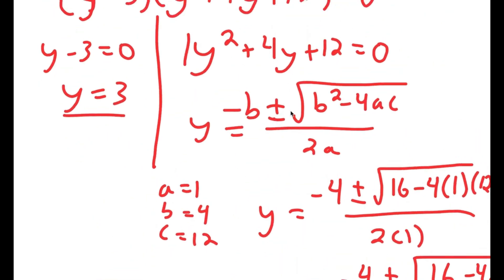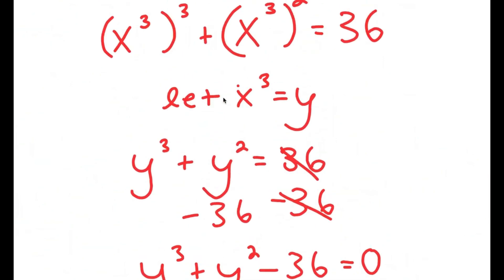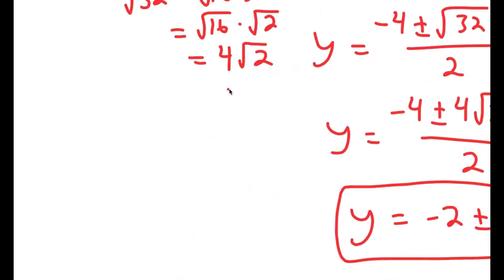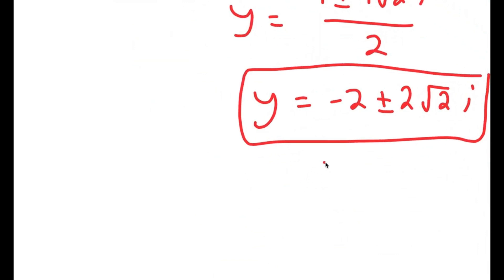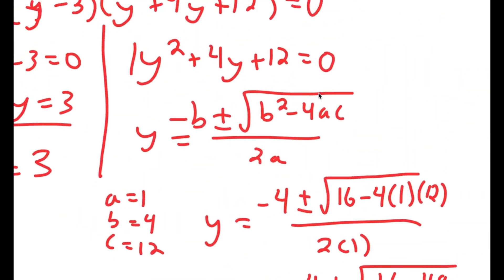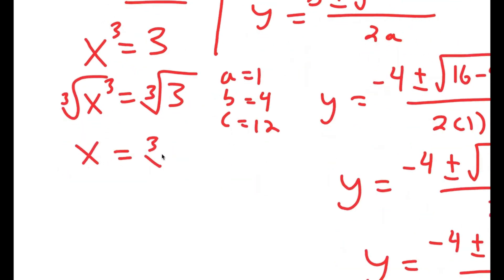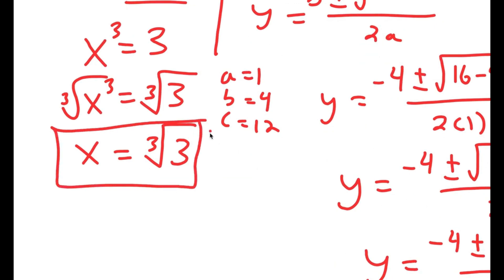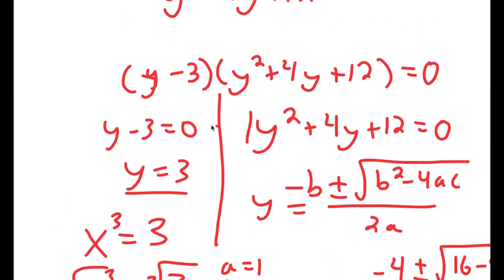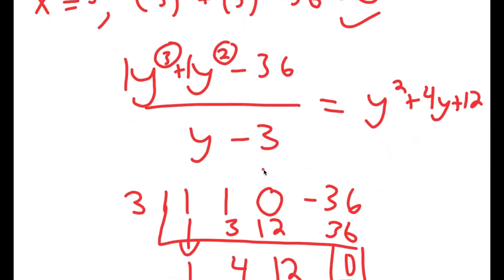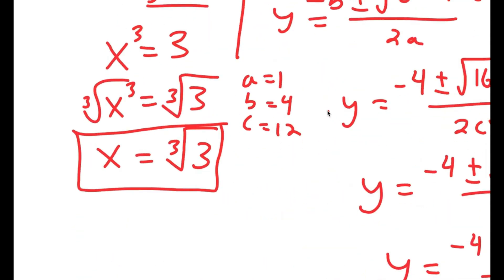So I have three solutions for y, but remember I let x to the power of 3 equal y. The complex solutions would require x to the power of 3 to equal an imaginary number, which we can't use. So the only valid solution is y equals 3, meaning x to the power of 3 equals 3. Taking the cube root of both sides gives x equals the cube root of 3. When solving problems like these, always find one solution first, then use synthetic division to find the remaining solutions.